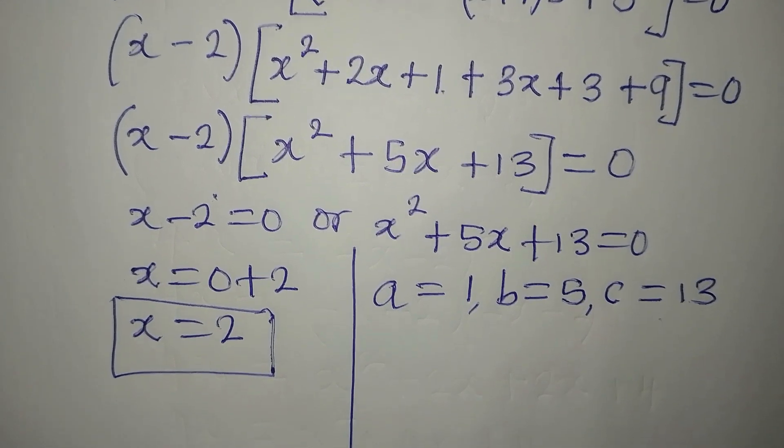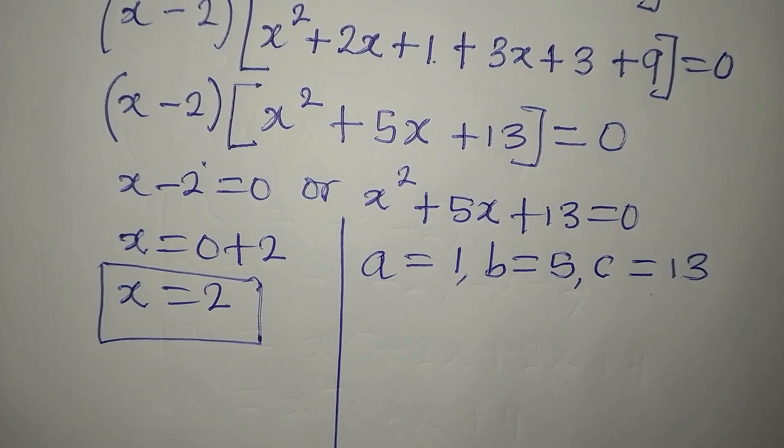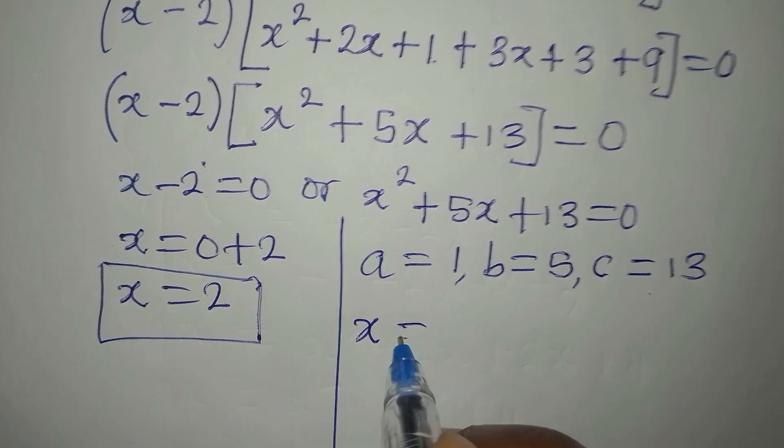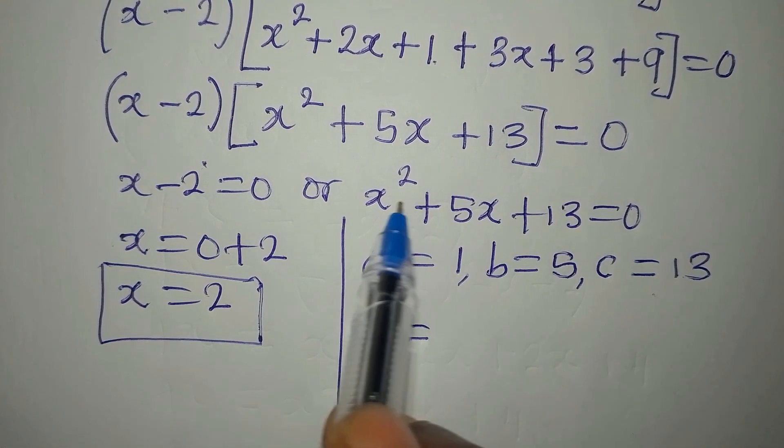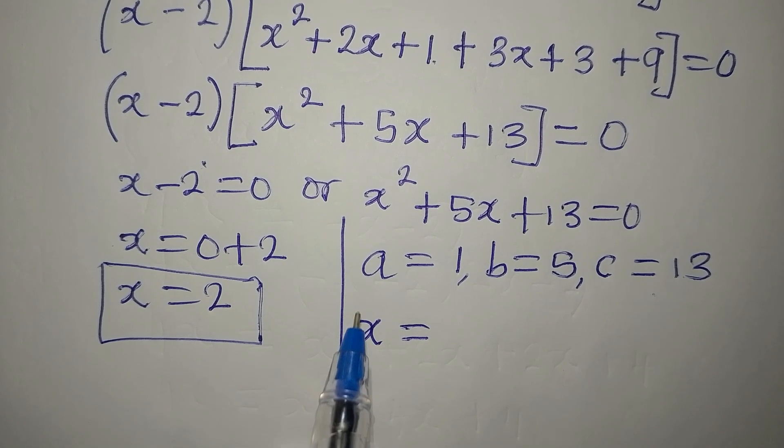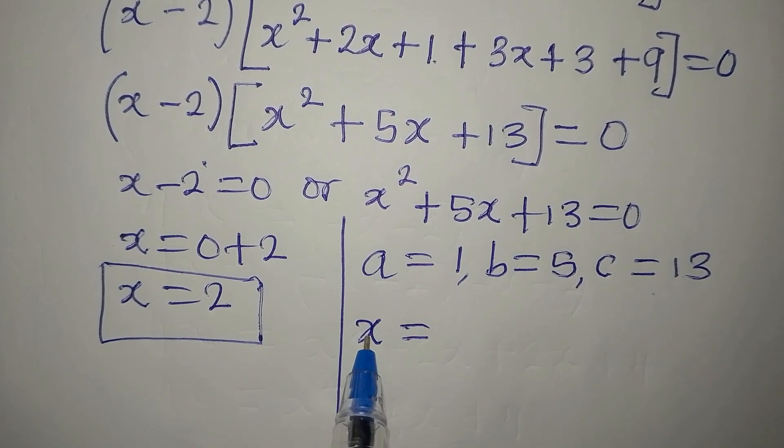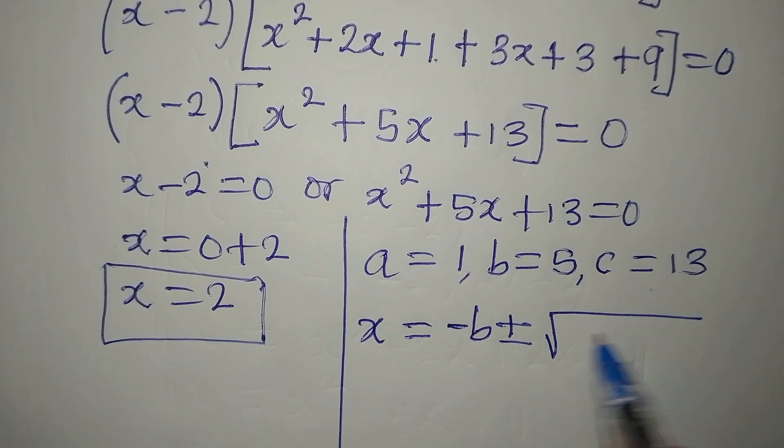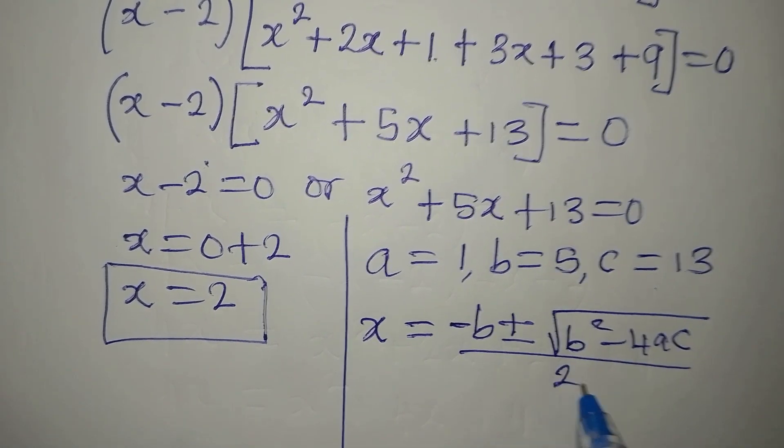Now the next target is to get the formula. So do you know the formula offhand? If no, look at it here. X is equal to minus b plus or minus square root of b squared minus 4ac, everything over 2a.